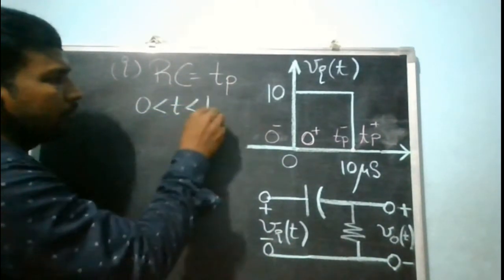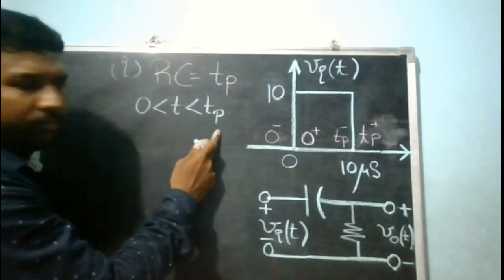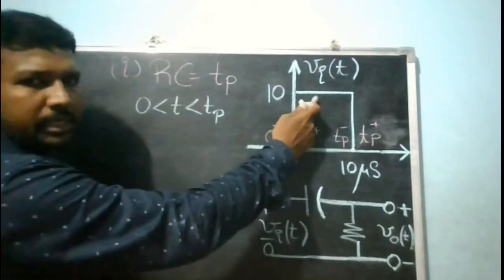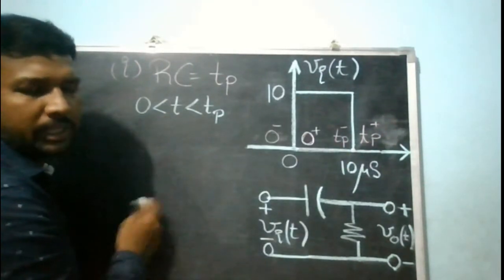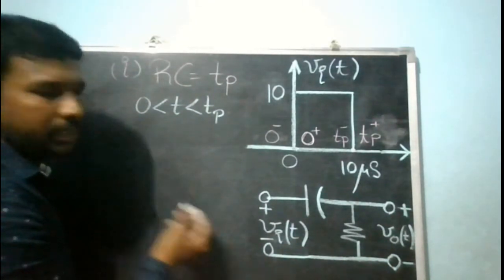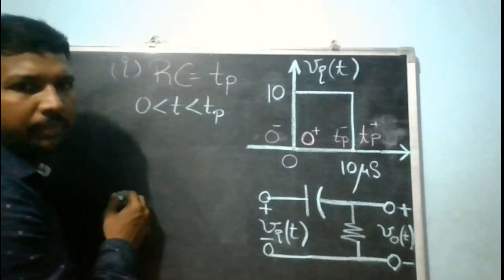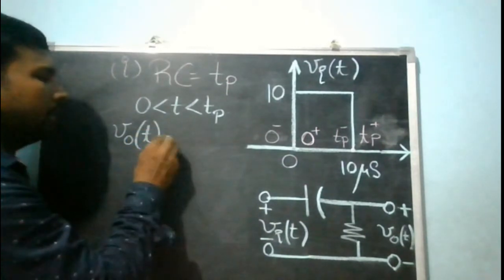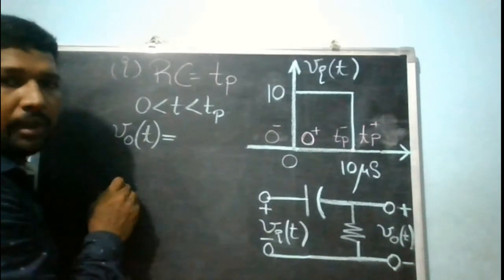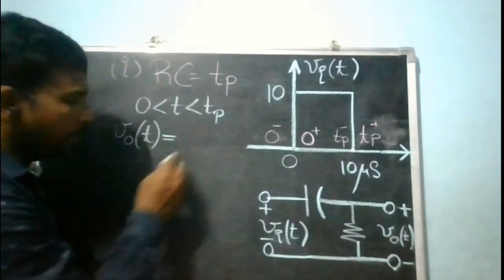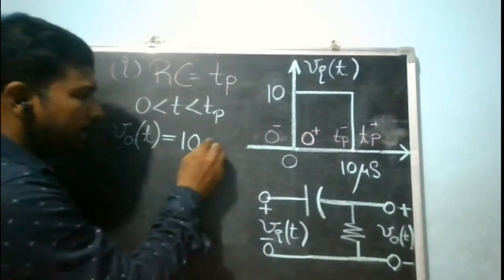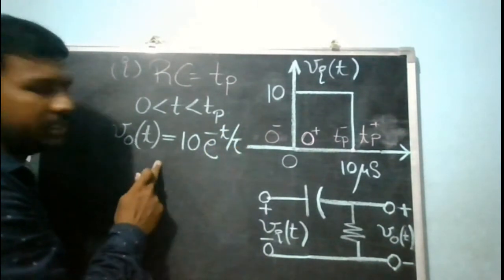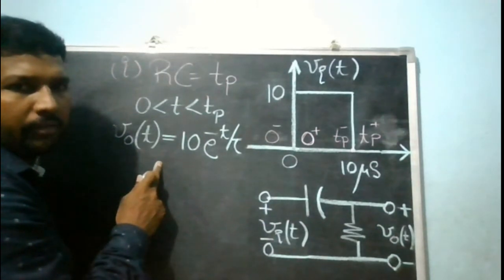Over the interval 0 to tp — that is, between 0 plus and tp minus — the input is plus 10 volts. When the input is a step input, you know what the output of an RC high-pass filter looks like. The output takes the standard discharging form: V into e to the power of minus t by tau, where V is 10 volts. So the output equation is 10 into e to the power of minus t by tau.